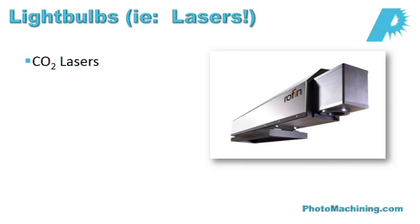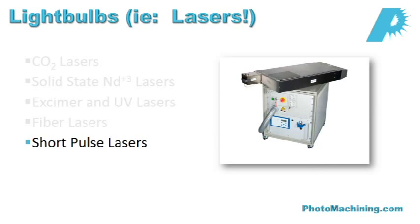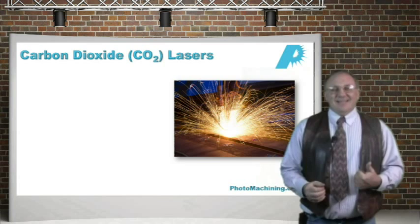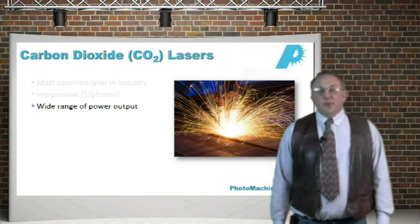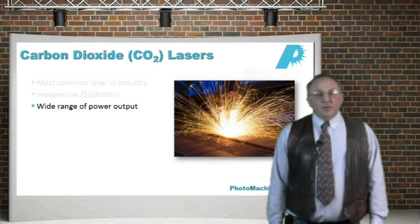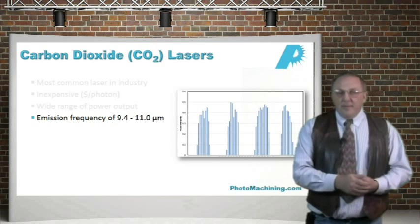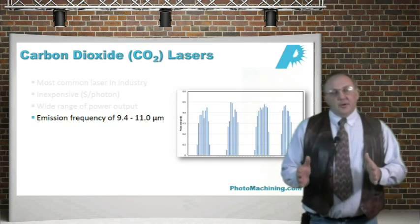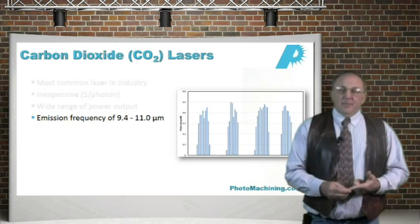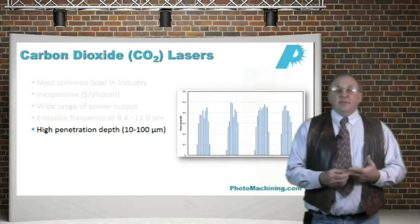Now let's look at the laser types themselves. We've talked about UV and infrared lasers; now let's look at some specific kinds: CO2 lasers, neodymium YAG lasers, excimer and other UV lasers, fiber lasers, and short pulse lasers — defined here as less than one nanosecond. Carbon dioxide lasers are the most common laser in industry, fairly inexpensive on a dollars-per-photon basis, with emission frequencies between about 9.4 and 11 microns. Within this range there are several emission lines. We can line-narrow these lasers to enhance one emission line — typically the 9.3 micron line, which is excellent for processing plastics such as Kapton, or the 10.6 micron line, which is very good for processing ceramics.